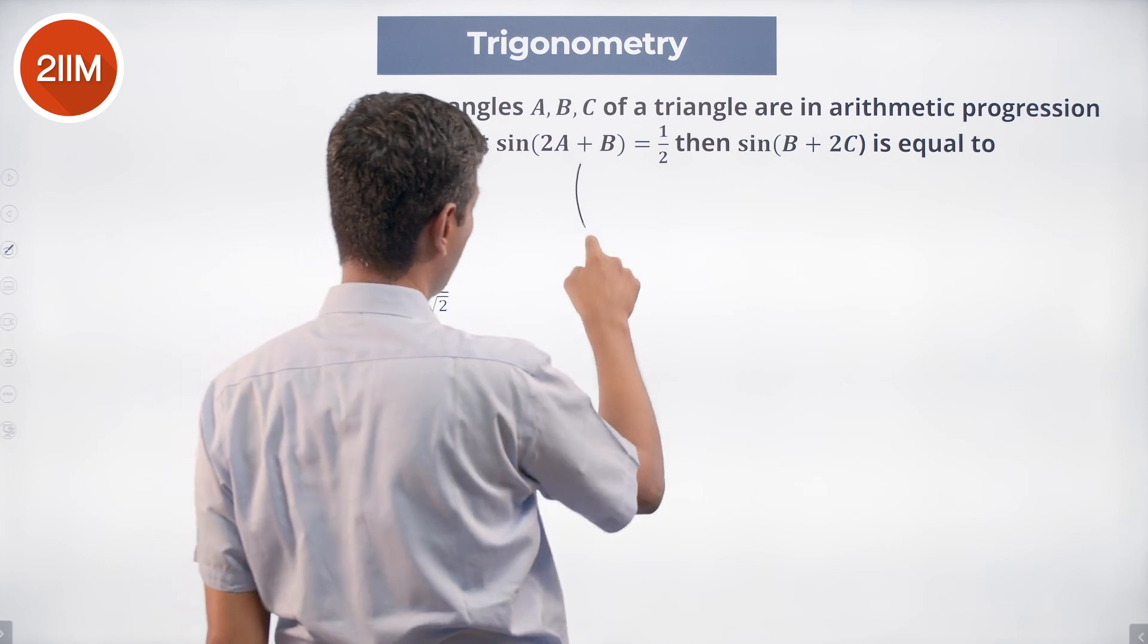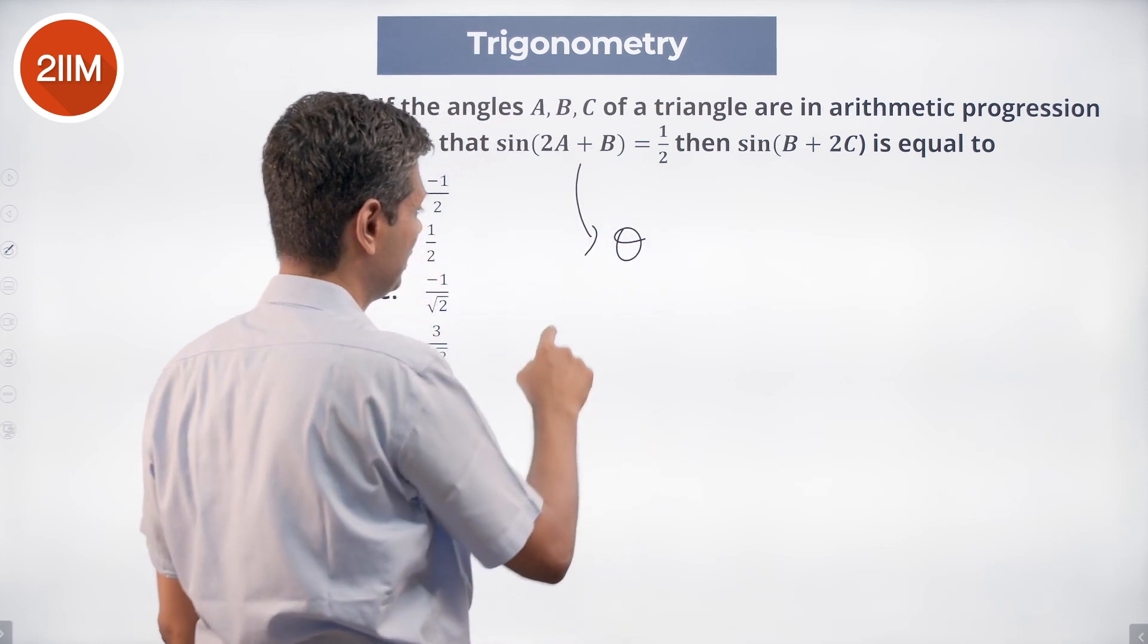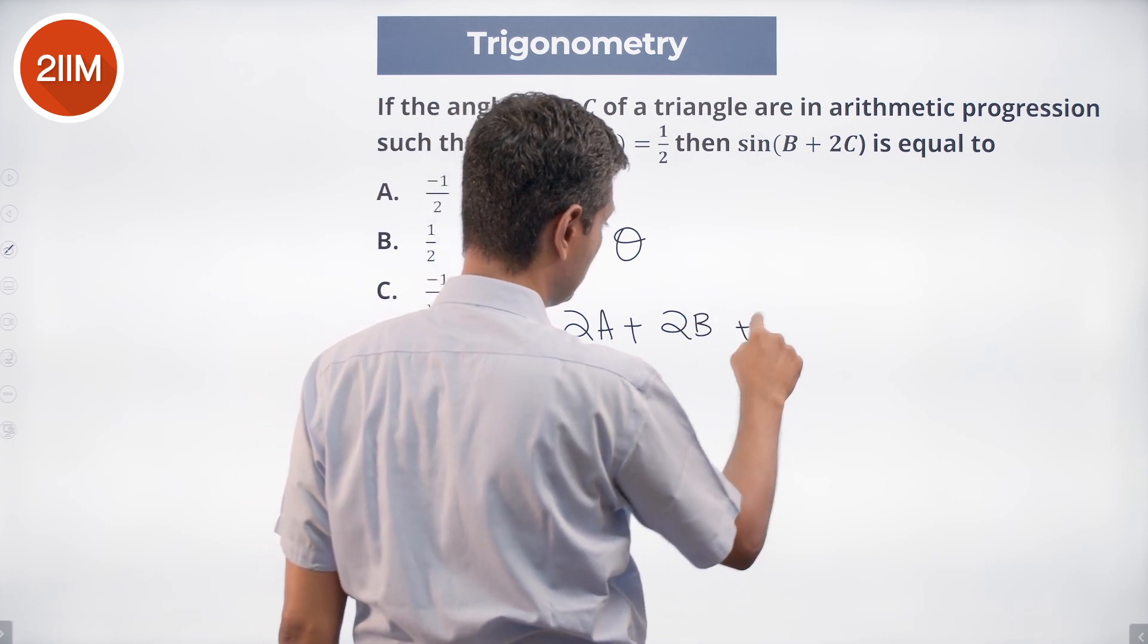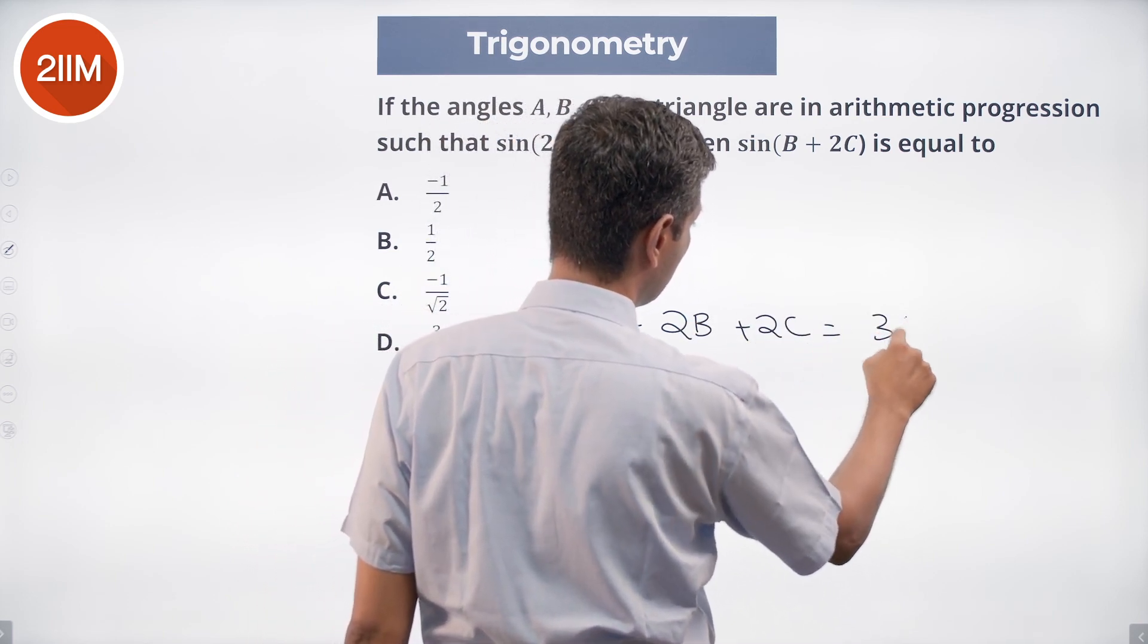Nice question. I am going to call 2A plus B as theta. I know that 2A plus 2B plus 2C is 360 degrees.